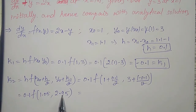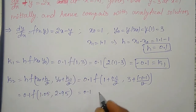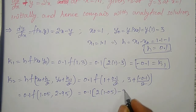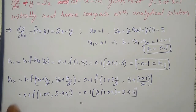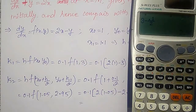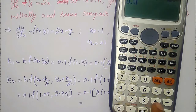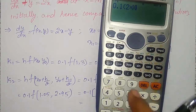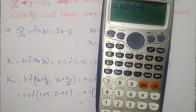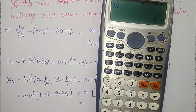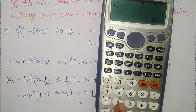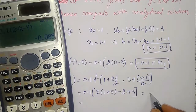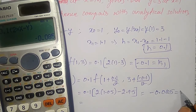f(x,y) is 2x minus y. So k2 equals 0.1 into (2 into 1.05 minus 2.95). Using the calculator with x equal to 1.05 and y equal to 2.95, I get k2 equal to minus 0.085.